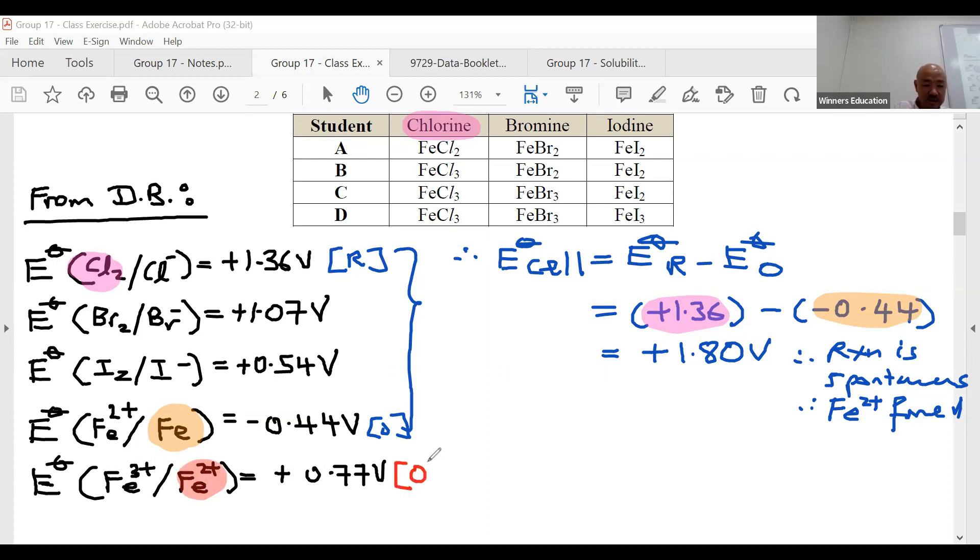The oxidized species here will still be your R, the Cl₂. So you calculate the second time: E° cell equals E°R, which is positive 1.36 once again, minus E°O, plus 0.77. You have a value for me? 0.59, thank you very much.